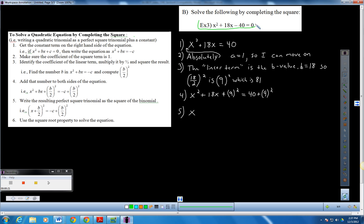I've started this process already to expedite this video. You can see what I started with. I want to get the constant term on the right side. The constant term is this 40 right here. So I'm going to add 40 to each side. By adding 40 to each side, I now have x² + 18x = 40.